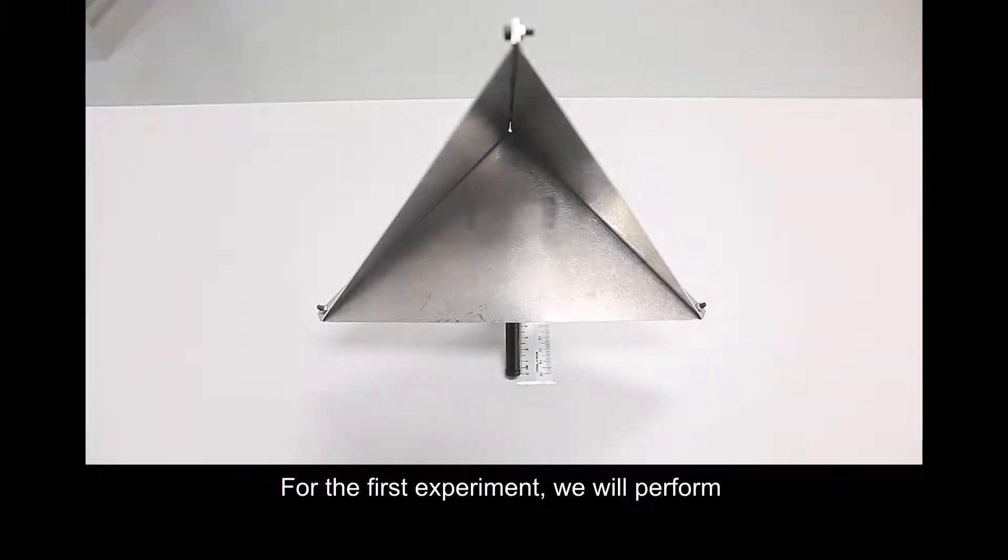For the first experiment, we will perform the repeat-pass InSAR experiment. Place the external target, trihedral, about 3 meters away at the middle of the scene to be scanned. Mark the zero position of the trihedral before the scan.